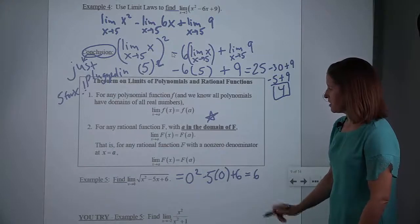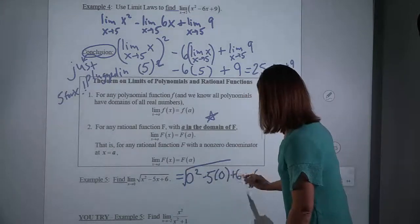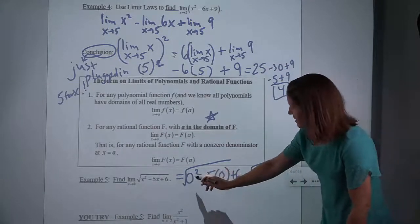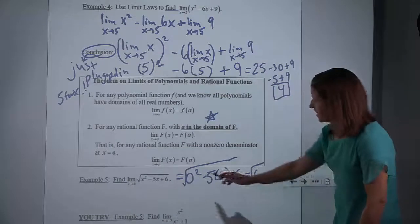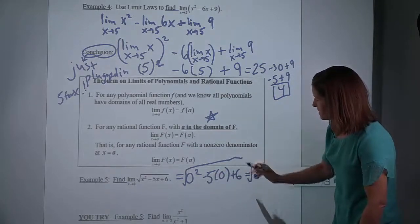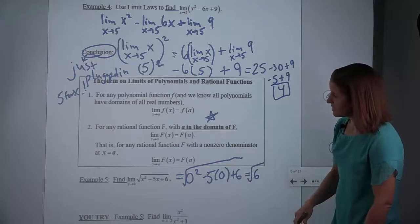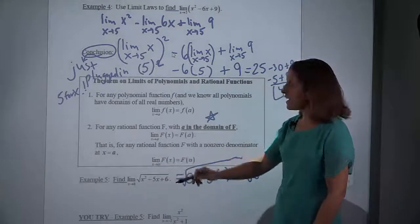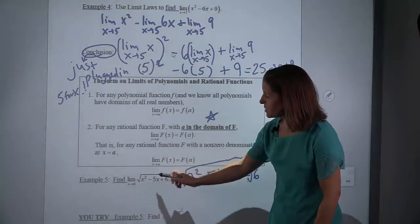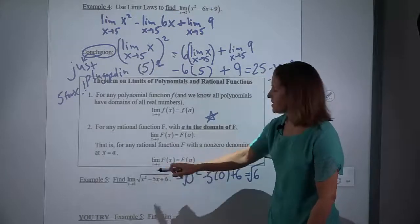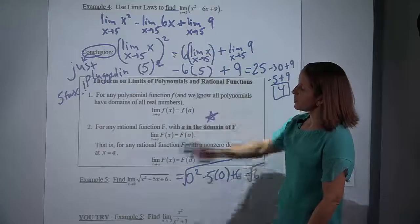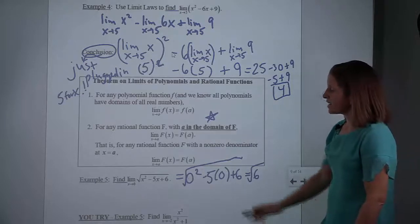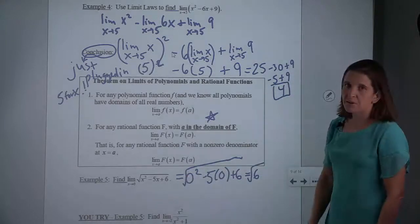So we get 0 squared minus 5 times 0 plus 6 under the square root — that's 0 minus 0 plus 6 — and our answer is the square root of 6. You didn't have to show me the rule where you put the limit inside the radical or the rule where the limit went with each sum and difference. That's what we showed earlier. But this is all you really do have to show me: show me that you're plugging in and what your answer is. So as x approaches 0 on this function, the answer is the square root of 6.